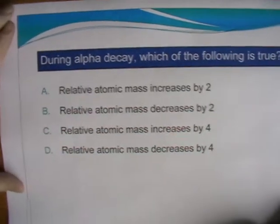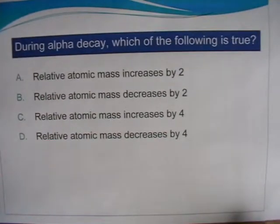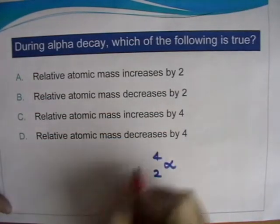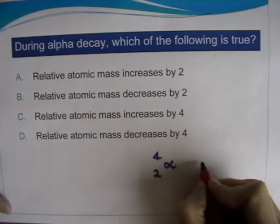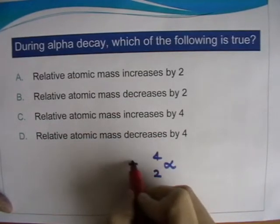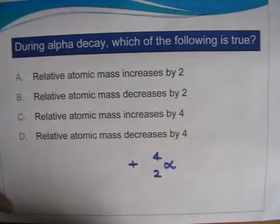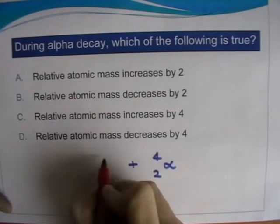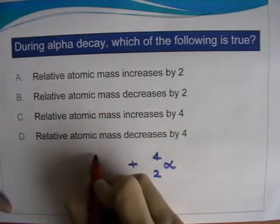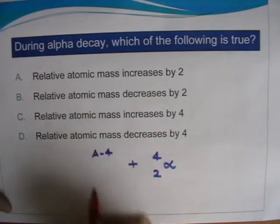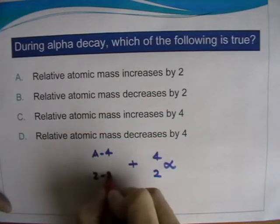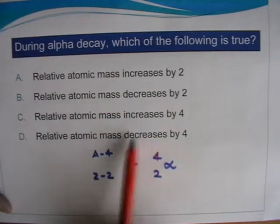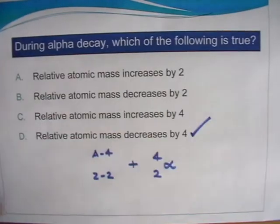And the last, just a wee question. During alpha decay, which of the following is true? We know in alpha decay that whatever new thing is produced, whatever new atom which is produced, it has lost 4 from its atomic mass number. So the atomic mass number has been reduced by 4. The atomic number has been reduced by 2. So this is about relative atomic mass and it's decreased by 4. So the answer there is D.